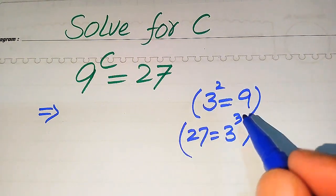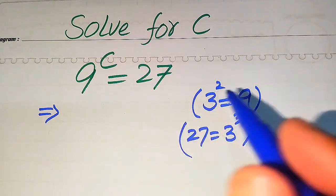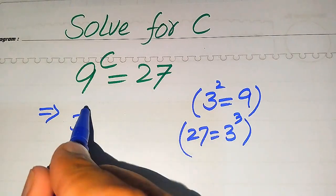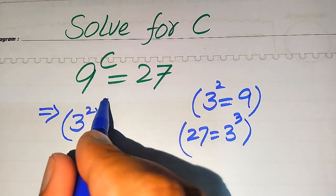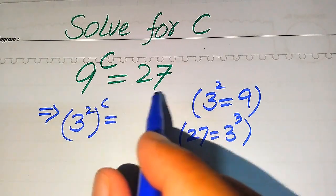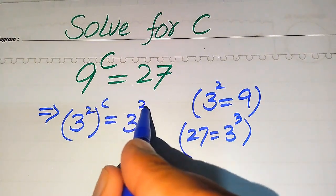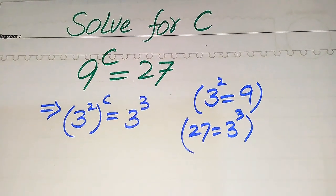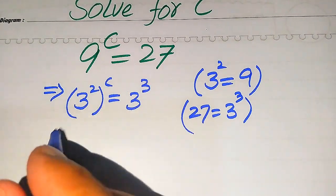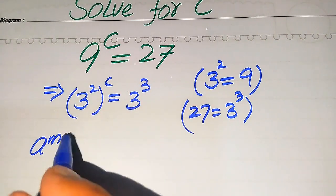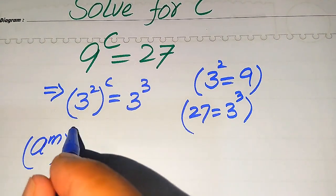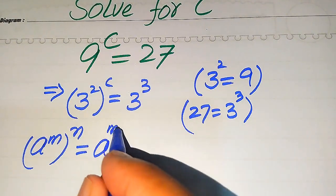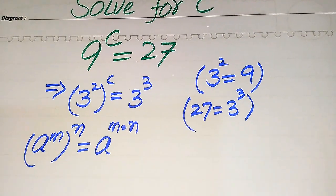We replace these two values on both sides of the equation, so we have 3 squared, and its whole power is C, equals 3 cubed. In the next step we use the algebraic formula: if we have A to the power of M, to the power of N, it equals A to the power of M multiplied by N.